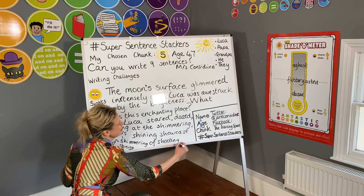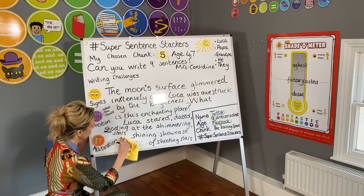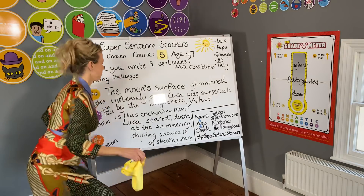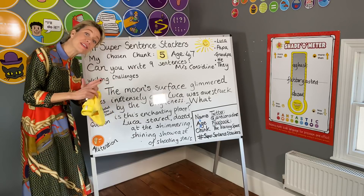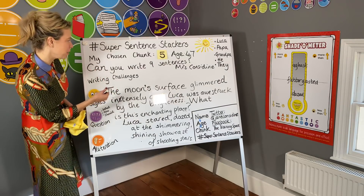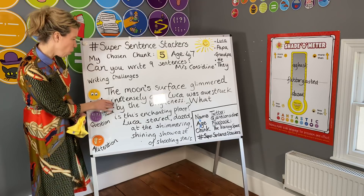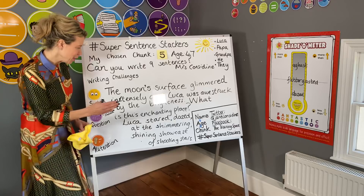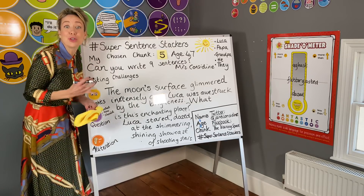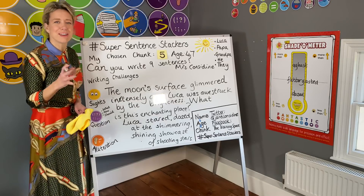I'm going to go back and reread that, taking the thinking away so we can read it really clearly. This is Mrs. C's three writing challenges writing for chunk five: 'The moon's surface glimmered intensely and Luca was awestruck by the brightness. What is this enchanting place? Luca stared, dazed, at the shimmering, shining showcase of shooting stars.' That is quite a tongue twister with all the alliterative beginnings there.